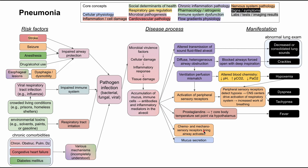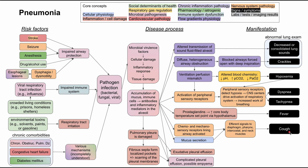Chemo and mechanosensory receptors lining your airways, along with mucus secretion in response to inflammatory mediators, together produce efferent signals to your diaphragm, pharynx, intercostal, and neck muscles — this manifests as a cough. Regarding pleural effusion: the inflammatory response in the alveoli can reach the pleura and damage the pulmonary pleura, which alone can cause an exudative pleural effusion. In later stages of pleural damage, fibroseptal pockets can form in the pleura, and if severe, scarring of the pleural membranes can occur — together causing a complicated pleural effusion and possible empyema.